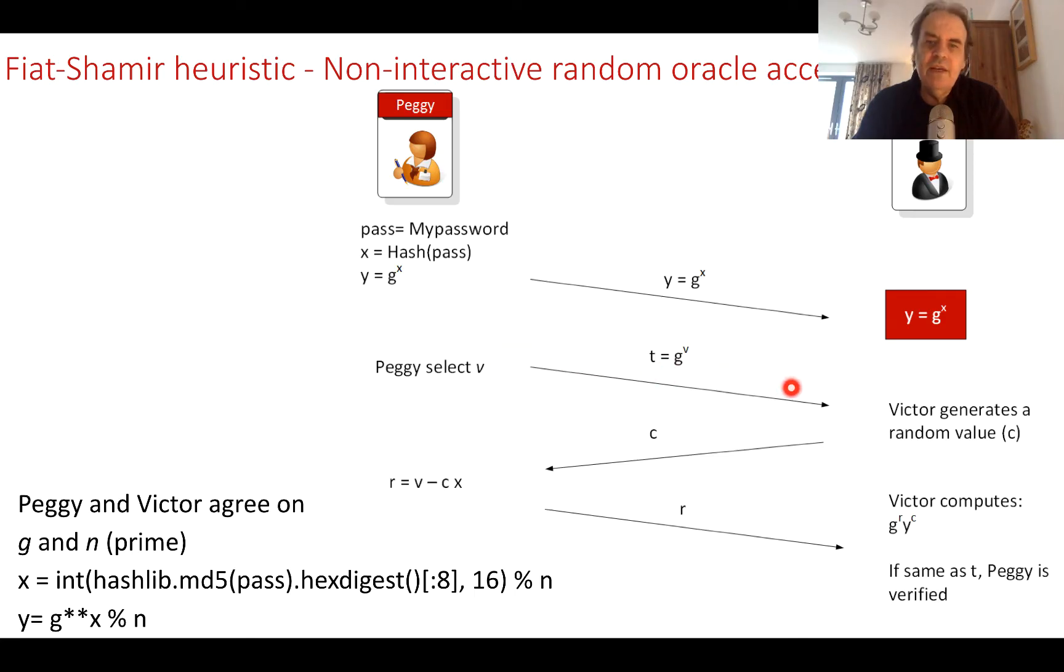When Peggy wants to log in, she takes a random value v and then generates g to the power of v, obviously mod n, and sends that over to Victor. Victor then takes another random value and sends over c, which is the challenge.